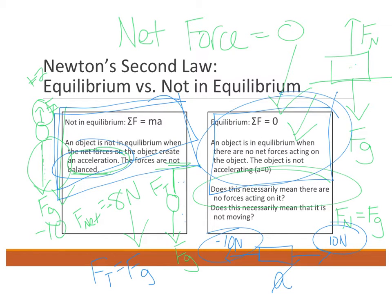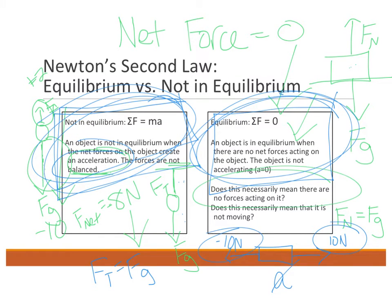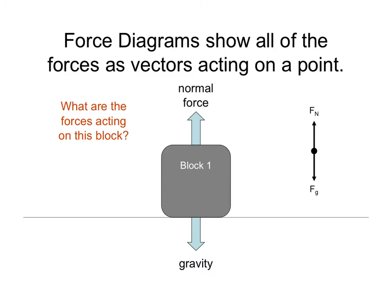Balanced versus unbalanced: balanced means no acceleration, and unbalanced means there is some form of acceleration. Looking at a diagram of a box with no motion, the force vectors are equal and opposite — this is a balanced force situation, also called equilibrium or static. No movement.